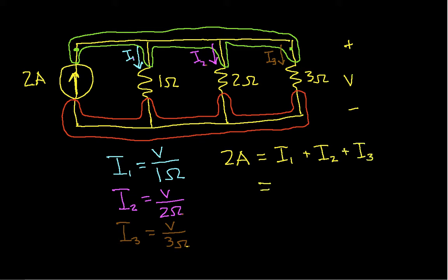Now all we need to do is plug in our expressions for I1, I2, and I3. We have 2A equals V over 1-ohm, V over 2-ohms, and V over 3-ohms.